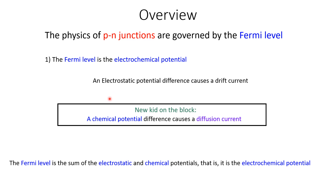So in PN junctions there are two types of potential — a chemical potential and an electrostatic potential — and two types of current: the drift current and the diffusion current. The sum of the chemical and the electrostatic potential, in other words the total potential, is the electrochemical potential. And the Fermi level is the electrochemical potential. This is one of the reasons why the Fermi level is so important in the physics of PN junctions.